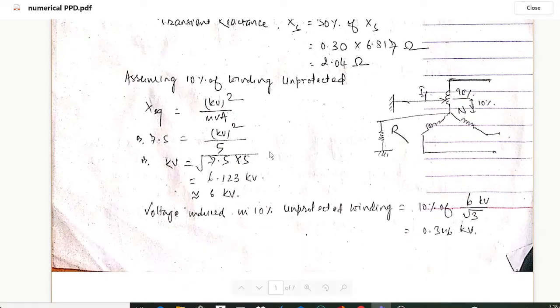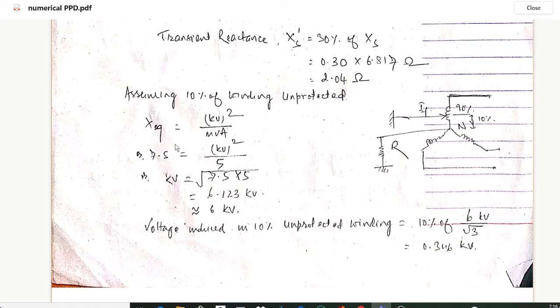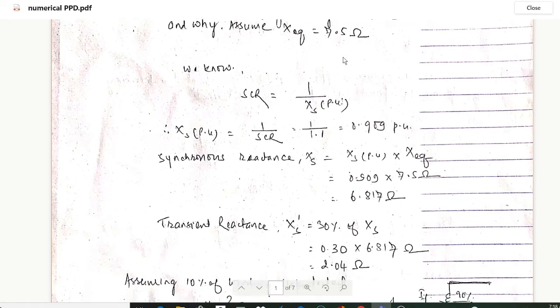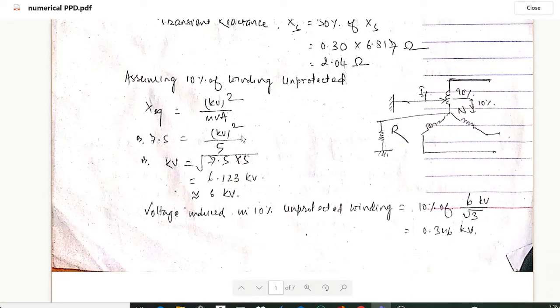Now assuming 10 percentage of winding unprotected, X equivalent will be kV squared upon MVA. X equivalent is 7.5, equal to kV squared upon MVA, and MVA is given as 5 MVA. So kV will be 6.123 kilovolts, and that will be equivalent to 6 kilovolts. Now voltage induced in 10 percentage of unprotected windings: for unprotected windings it will be 10 percentage of Vp, so 6 upon root 3, so we will get 0.346 kilovolts.